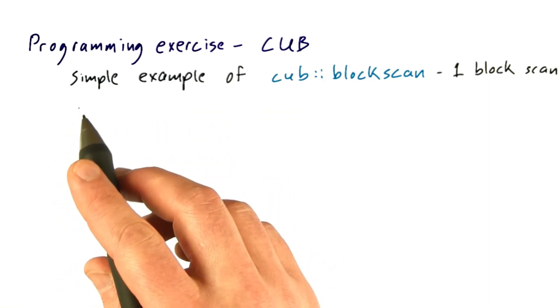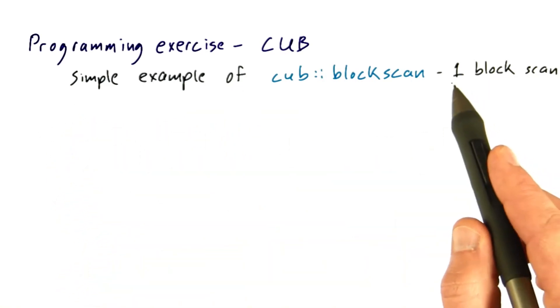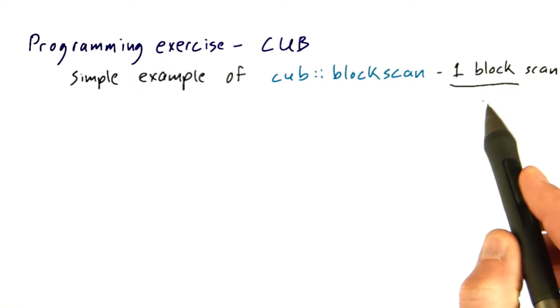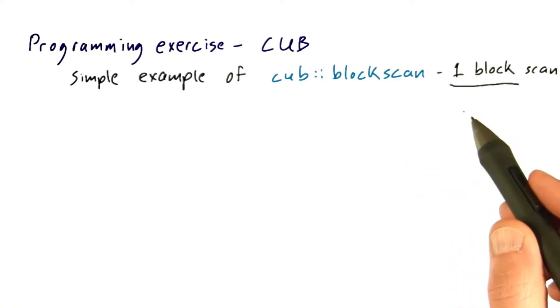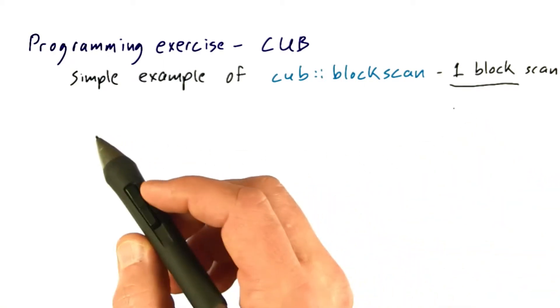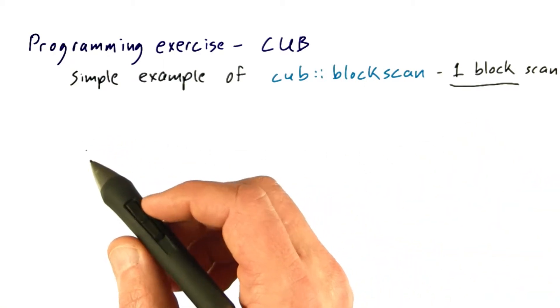There are a couple different things about this from some examples you've seen. We're focusing on a single block because the whole point of CUB is to give you intra-block primitives—code for writing your own thread block level code within CUDA kernels. So we're just going to time a single block.